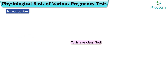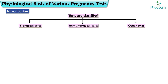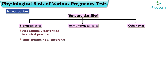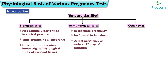The tests are classified into Biological Test, Immunological Test, and Other Test. The biologic tests are not routinely performed in clinical practice, as these are time-consuming and expensive, and interpretation requires knowledge of histological study of the gonadal tissues. Immunological tests are done to diagnose pregnancy, as these tests can be performed in less time and they detect pregnancy as early as the seventh day of gestation.